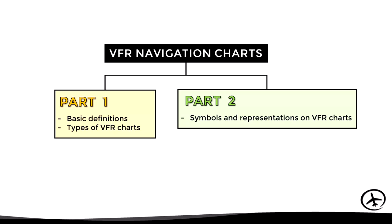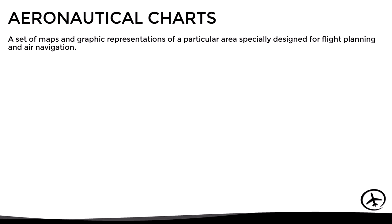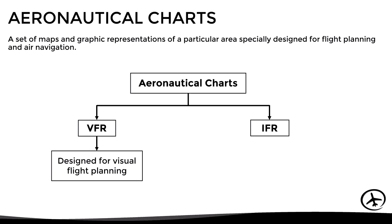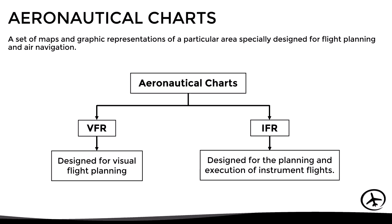So without any further ado, let's get started. As we already mentioned in previous videos, aeronautical charts are a set of maps and graphic representations of a particular area specially designed for flight planning and air navigation. In general terms, we can classify them into two main groups: VFR and IFR charts. This way, VFR charts are designed for visual flight planning, while IFR charts are designed for the planning and execution of instrument flights.